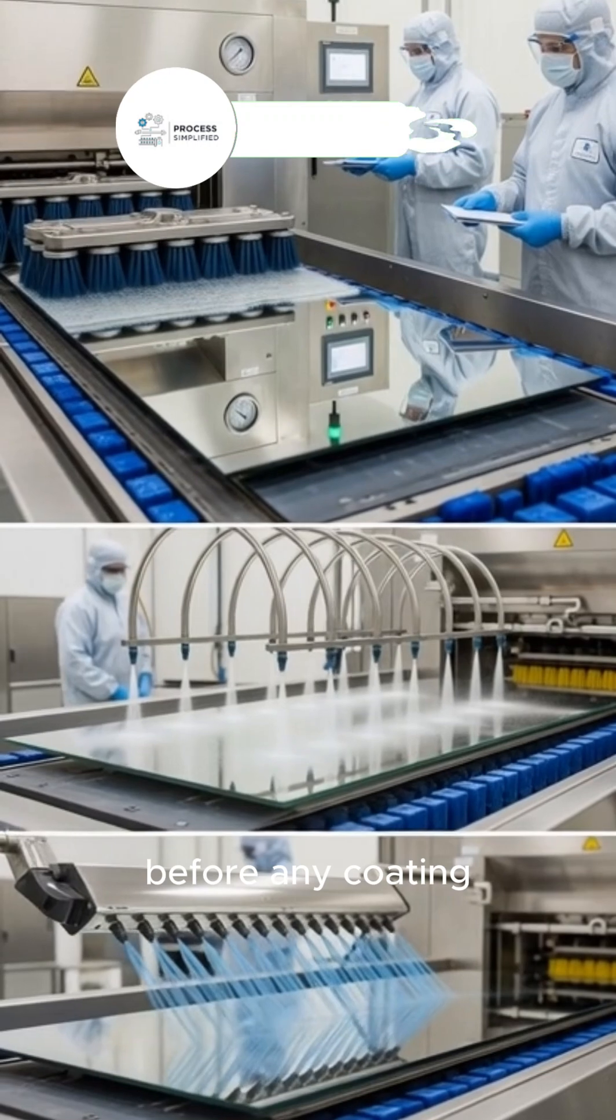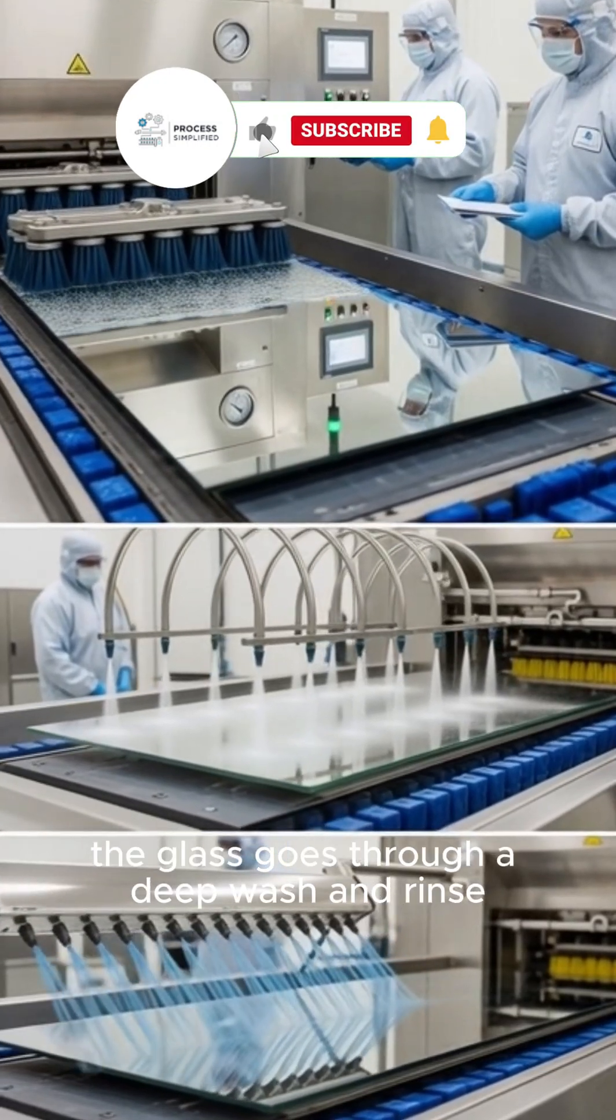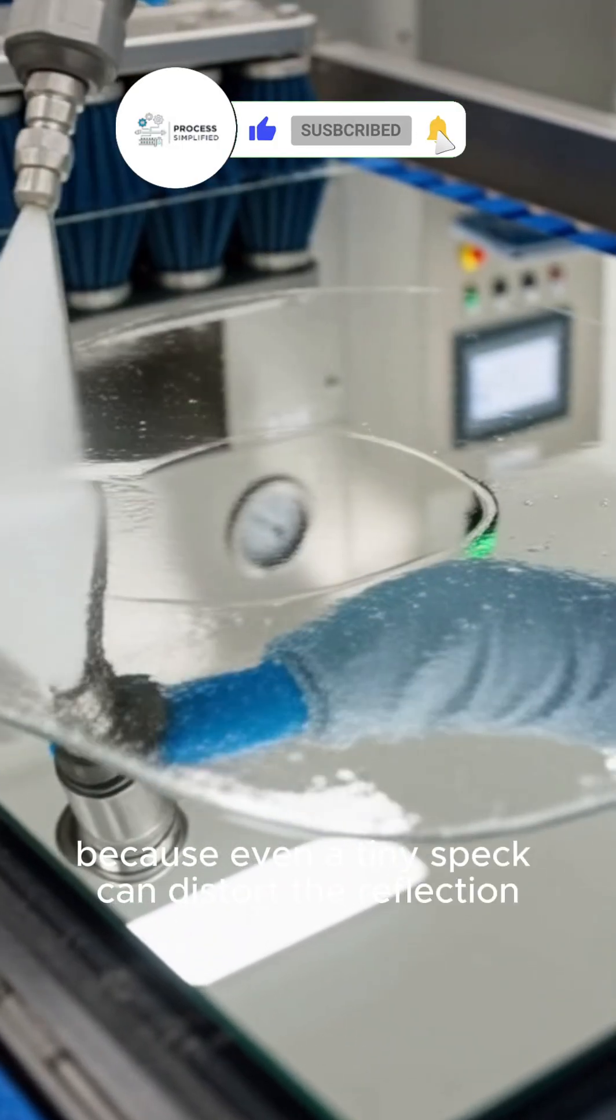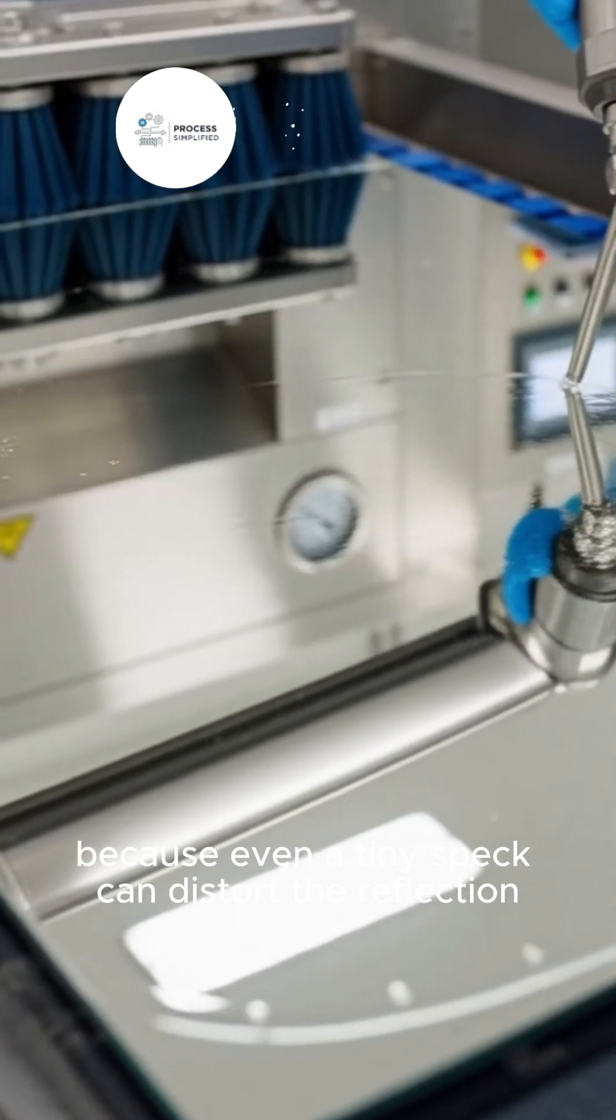Before any coating, the glass goes through a deep wash and rinse, because even a tiny speck can distort the reflection.